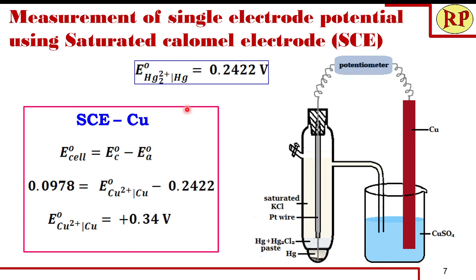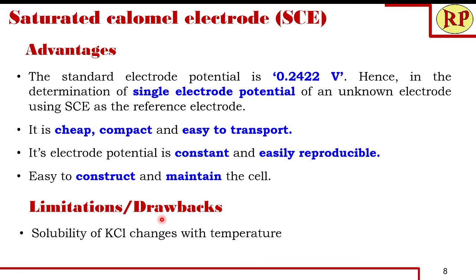When the SCE is coupled with copper, the SCE acts as anode and copper as cathode. The side tube again acts as the salt bridge, and the potentiometer reads 0.0978 V. Using E_cell = E_cathode − E_anode, with the standard reduction potential of the SCE as 0.2422 V, the standard reduction potential of copper is calculated as 0.34 V. This confirms the SCE is a very useful and common reference electrode in laboratories.